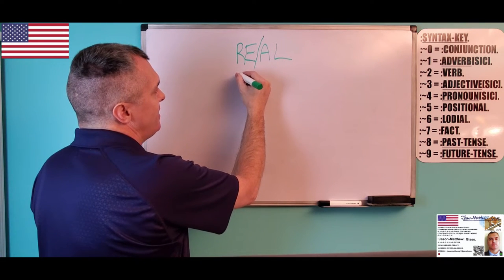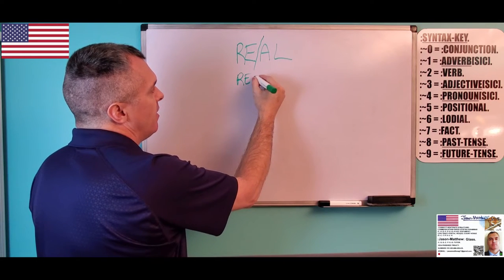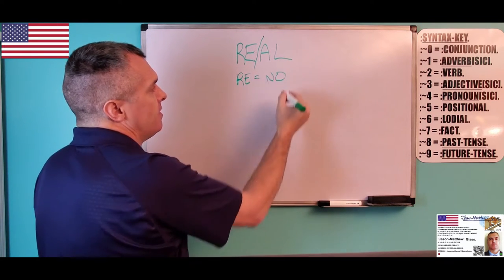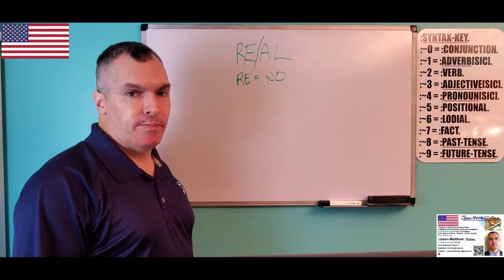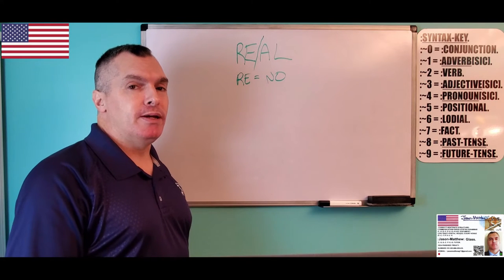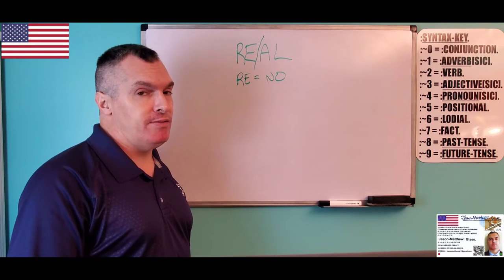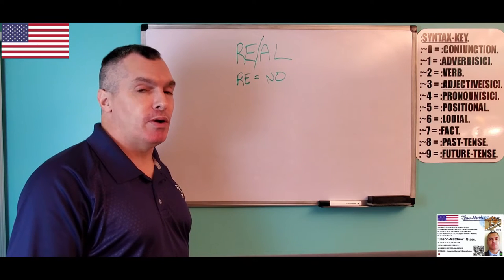And when we use Parse and we look at an etymology dictionary, R, E equals no, because it comes with a sense of undoing. And if you look it up in a Latin dictionary, it literally says R, E means stop, halt, a particle of negation.